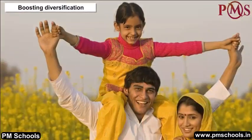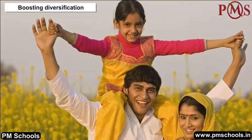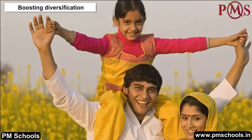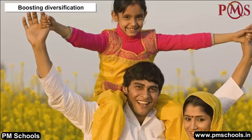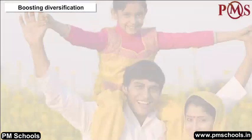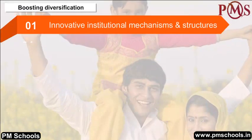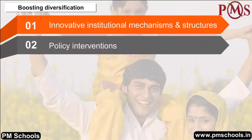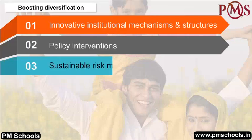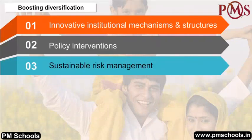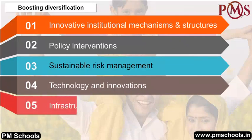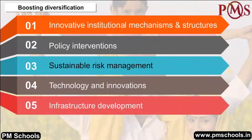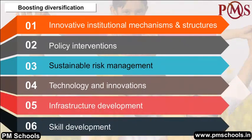Boosting Diversification: To further augment rural income, we need to move up the curve through key focus areas of intervention: 1. Innovative institutional mechanisms and structures, 2. Policy interventions, 3. Sustainable risk management, 4. Technology and innovations, 5. Infrastructure development, 6. Skill development.